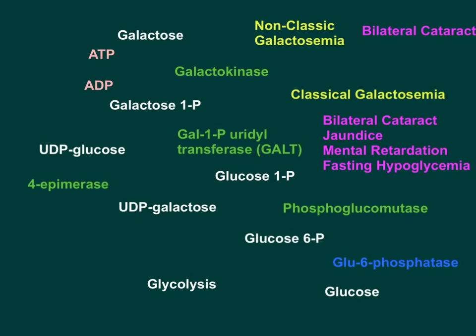Galactose, as you may know, you get from lactose. Lactose is a milk carbohydrate. Lactose is broken down into glucose and galactose in our intestine by the lactase enzyme. Once the galactose part of lactose is absorbed, let's see what happens to it. Galactose is predominantly metabolized in the liver, and also in other tissues.